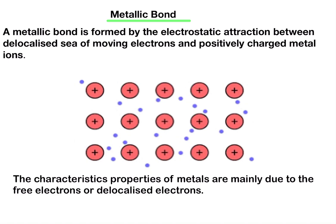If you look at this figure you will see the central positive cation written as plus, and the purple small dots represent the electrons. There is an electrostatic attraction between this delocalized sea of moving electrons and the positively charged cation. The electrons keep on moving and this produces a very strong bond between the positively charged cations.